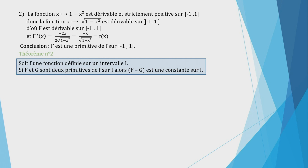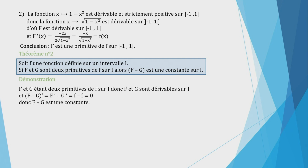Deuxième théorème : soit f une fonction définie sur un intervalle I. Si F et G sont deux primitives de petit f sur I, alors la différence F - G est une fonction constante sur I. Démonstration : F et G étant deux primitives, elles sont dérivables sur I. Donc (F - G)' = F' - G' = f - f = 0, d'où F - G est une constante.